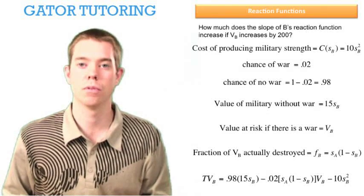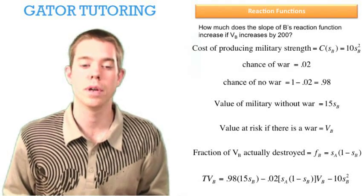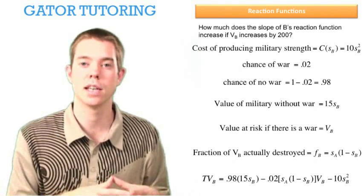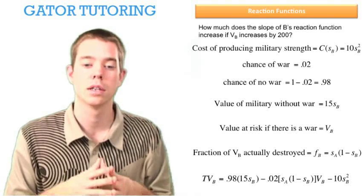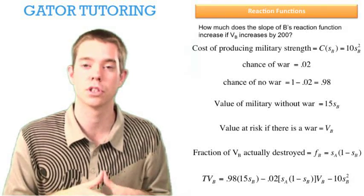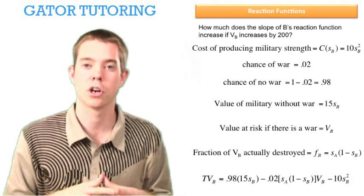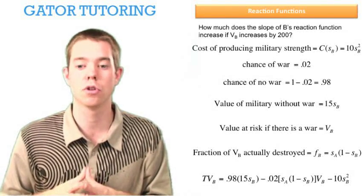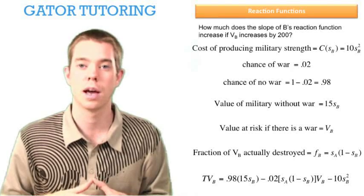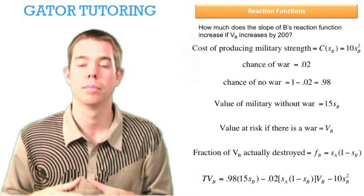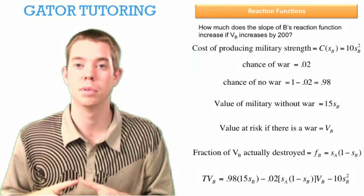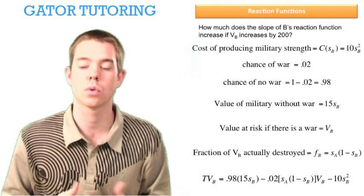So this is how the total value function looks. We have our benefit of non-war military functions, which is the 98% chance we don't go to war times 15*SB, which is the value of our military without war, minus the probability that we do go to war, which is 2%, times the fraction of the value lost multiplied by the value. And then of course minus military spending, which was 10*SB^2.